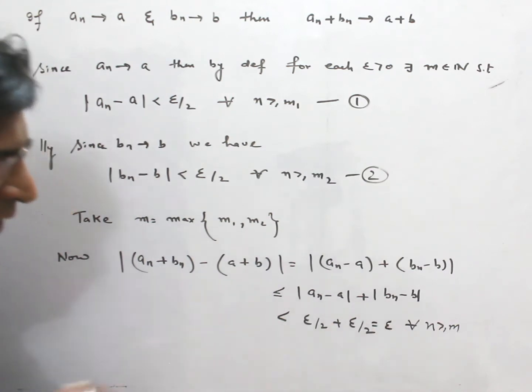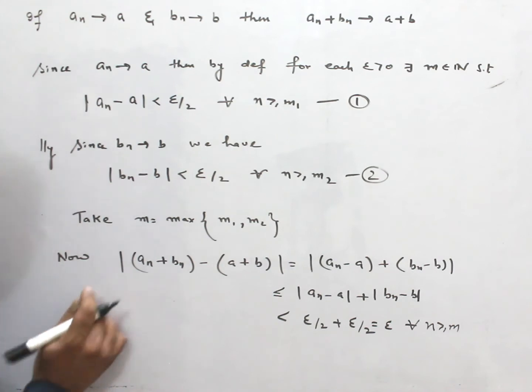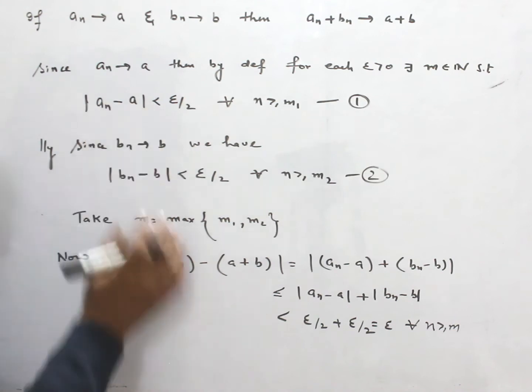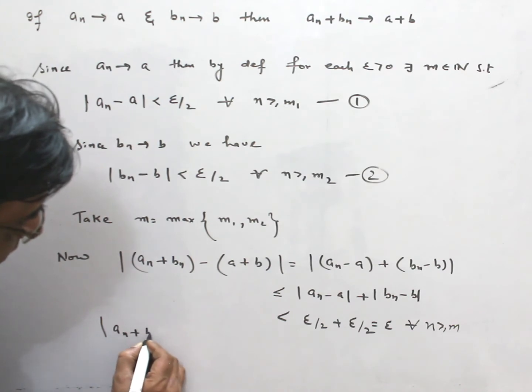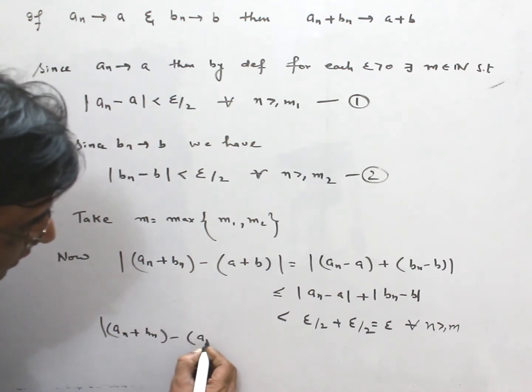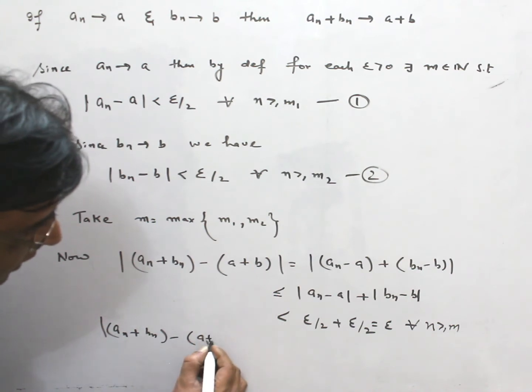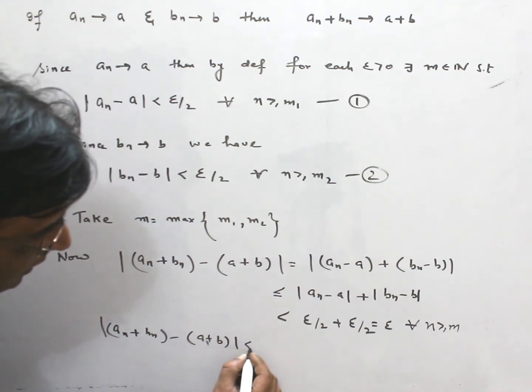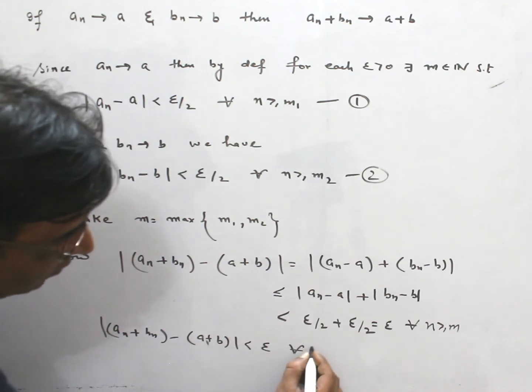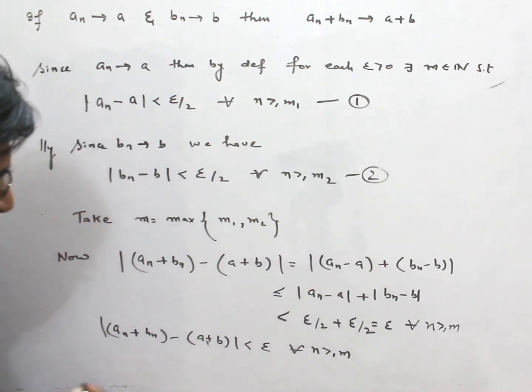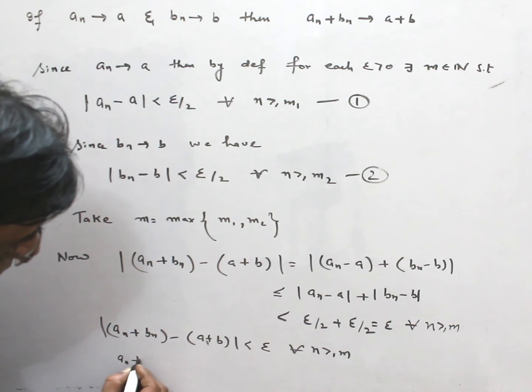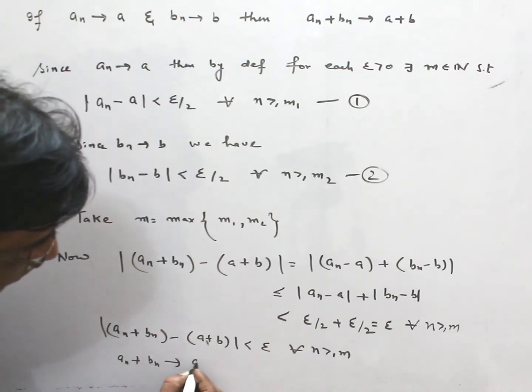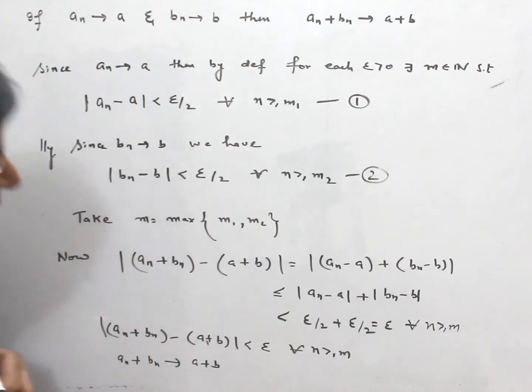That means, what we have got, by the definition, we have got |(An + Bn) - (A + B)| < ε for N greater than or equal to M. This means An plus Bn converges to A plus B.